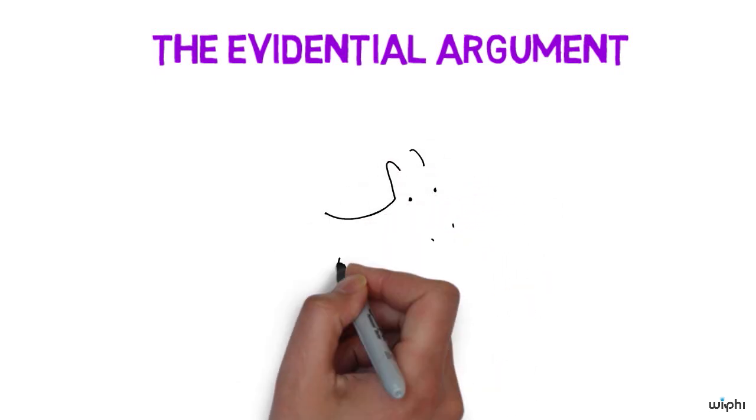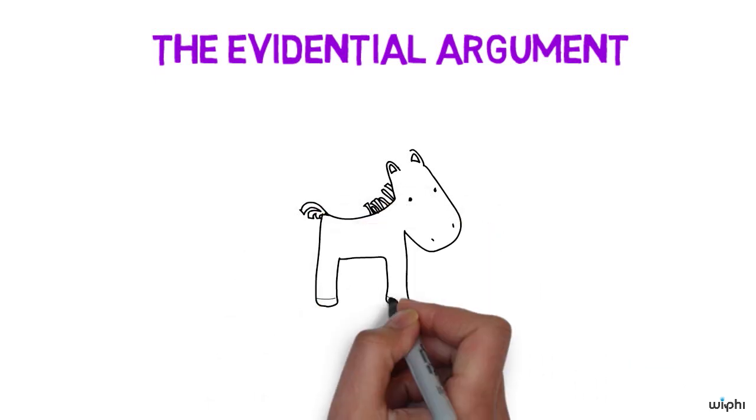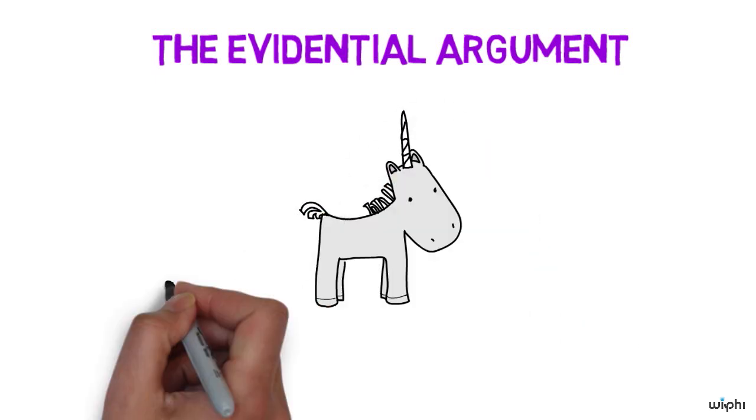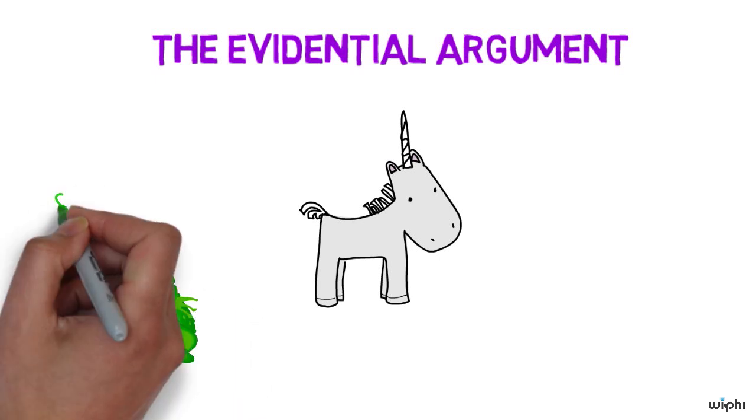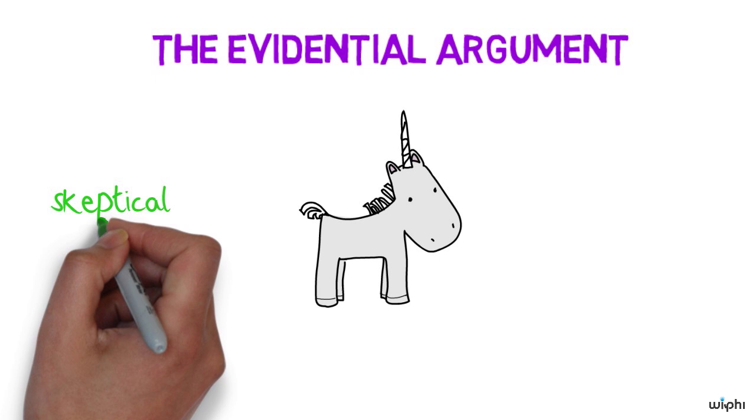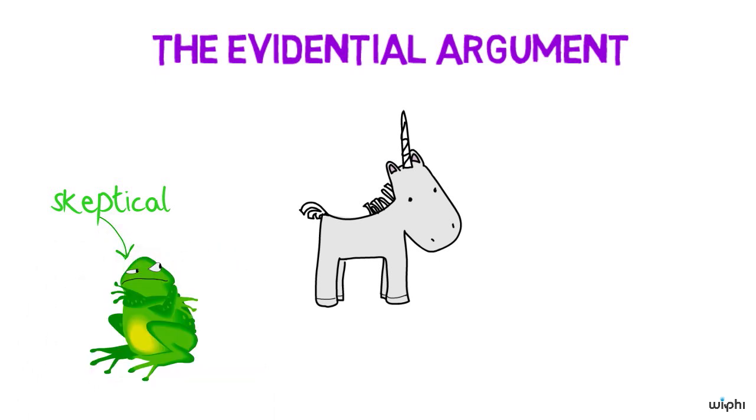Rather than the charge of contradiction, I like to call this the unicorn objection. Just like a unicorn might exist, but they're awfully hard to find, this argument starts with the idea that maybe God has a reason to allow the evil we witness, but it sure seems like there's no reason out there.